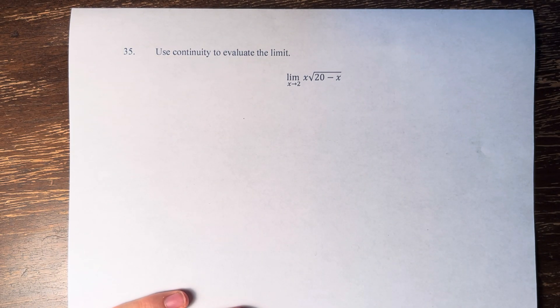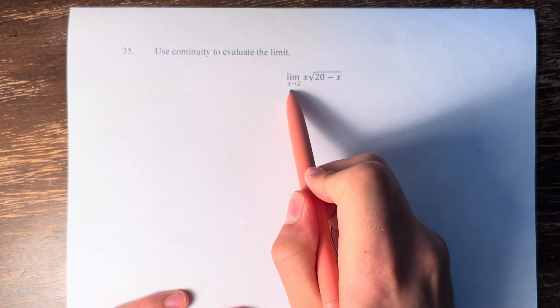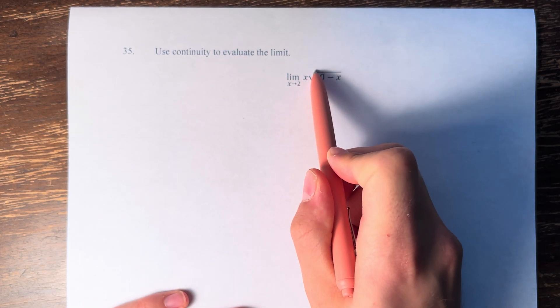Hello and welcome back to another video. In this problem, we're asked to use continuity to evaluate the limit. We have the limit as x approaches 2 of x times the square root of 20 minus x.